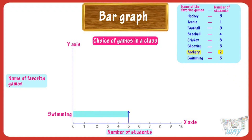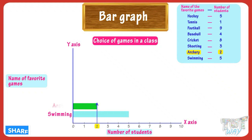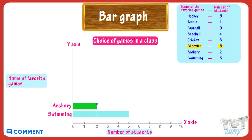It's given that 2 students like archery the most, so make a rectangular bar on the y-axis up to the mark of 2. It's given that 3 students like shooting the most, so make a rectangular bar on the y-axis up to the mark of 3.